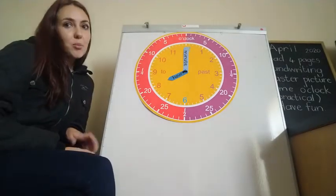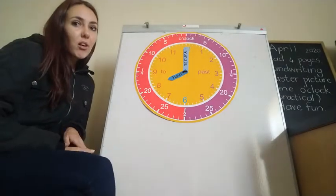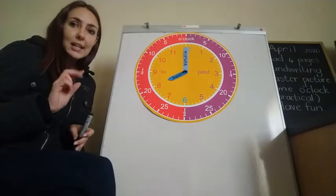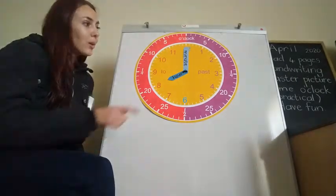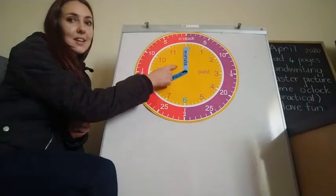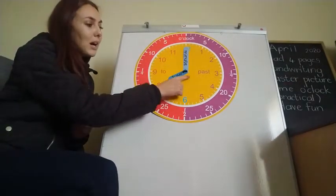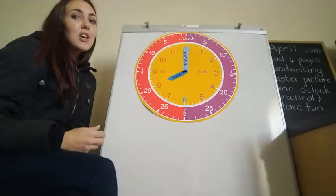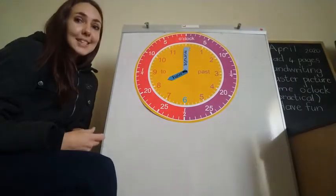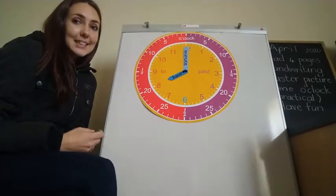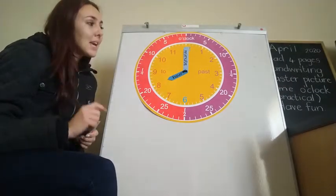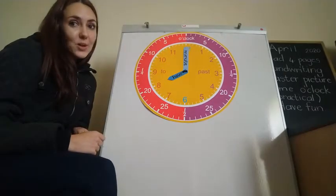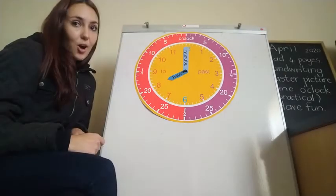Just to recap what we did in class: we have two hands on the clock. We have our minute hand and we have our hour hand. There are 60 seconds in one minute and there are 60 minutes in one hour.